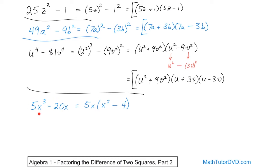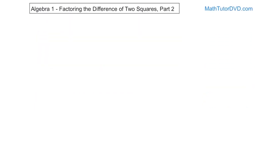This is factoring out 5x from that expression — distribute back in and you get the original. Now, wait — I'm not done, because this is a difference of two squares: x squared is obviously x squared, and 4 is 2 squared. So I can further simplify this by saying 5x times x plus 2, x minus 2. This is the fully factored version. Sometimes you'll be given problems where it doesn't look like a difference of two squares, but once you do an initial factor, you'll see perfect squares and can simplify even further.